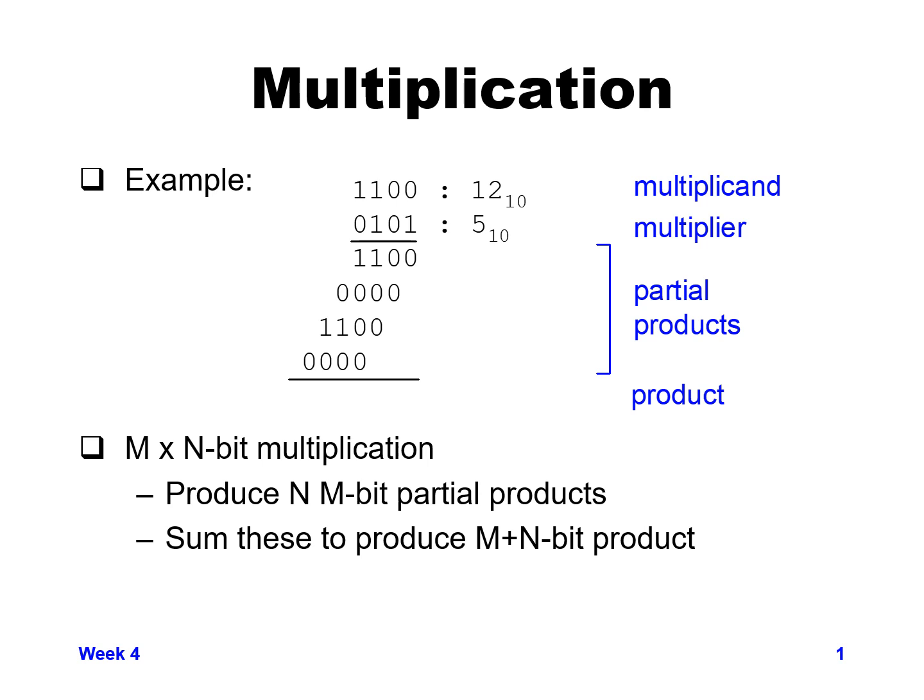Finally, we take the last bit of the multiplier, which is a zero. It gives us all zeros when multiplied by the multiplicand, and we copy it down shifted three bits to the left. Now we have four partial products based on the number of bits in our multiplier, and we add those together to get the total product — the number 60 in base 10. For an m-bit multiplicand and n-bit multiplier, we get n partial products and a total sum that is n plus m bits wide.